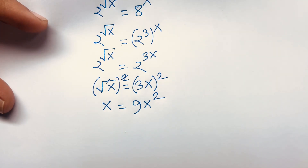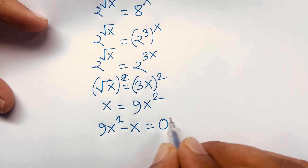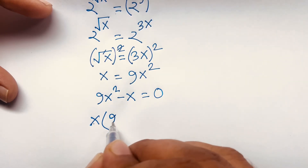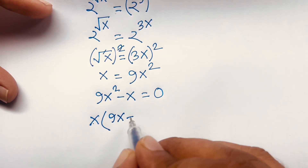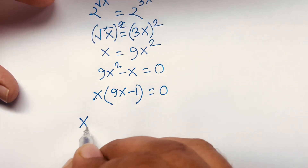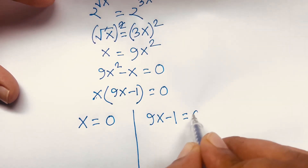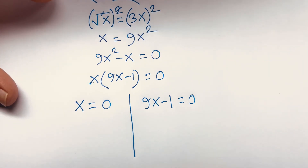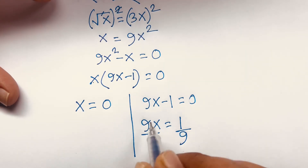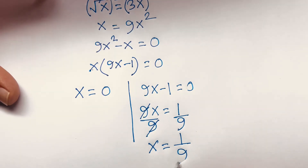So it will be 9x squared minus x is equal to 0. Here, x is common, so factoring gives x times 9x minus 1 is equal to 0. We find two cases: the first case is x is equal to 0. The other case, 9x minus 1 equals 0, so 9x equals 1, and dividing both sides by 9 gives x is equal to 1 over 9.